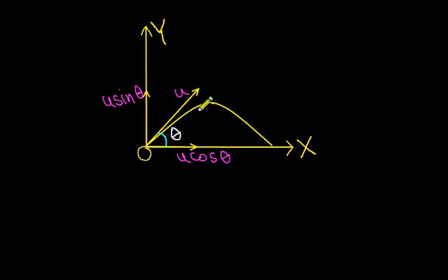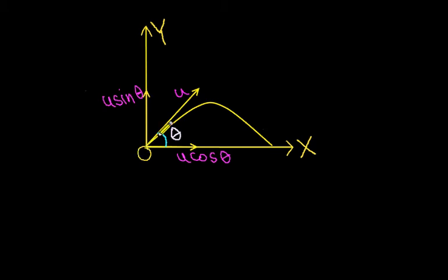As I have shown you in the diagram, this is the path actually followed by the particle. The point from which the particle is thrown is O, which is the origin. At the exact time when the particle started moving, let the velocity of that particle at that moment be u.